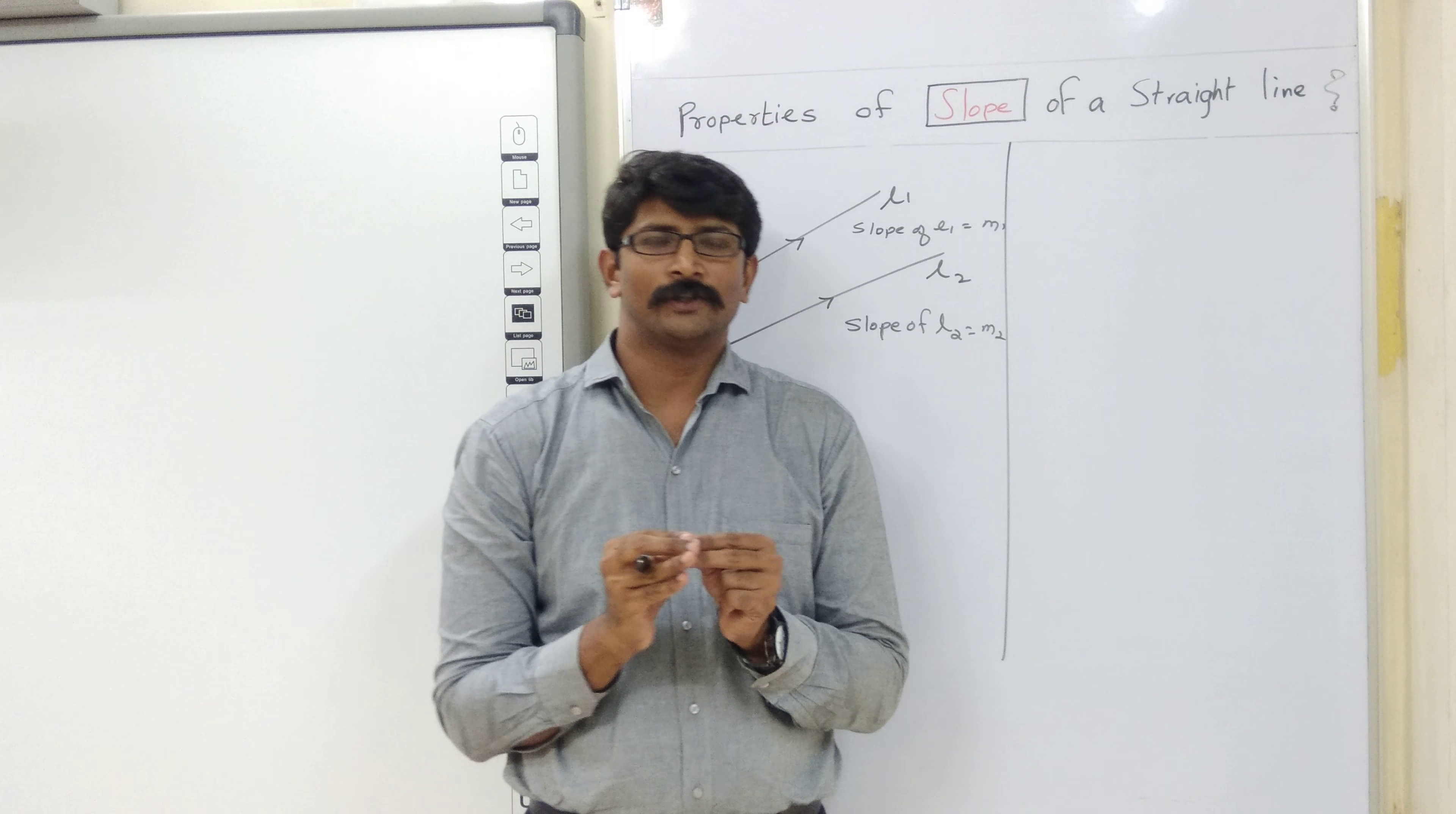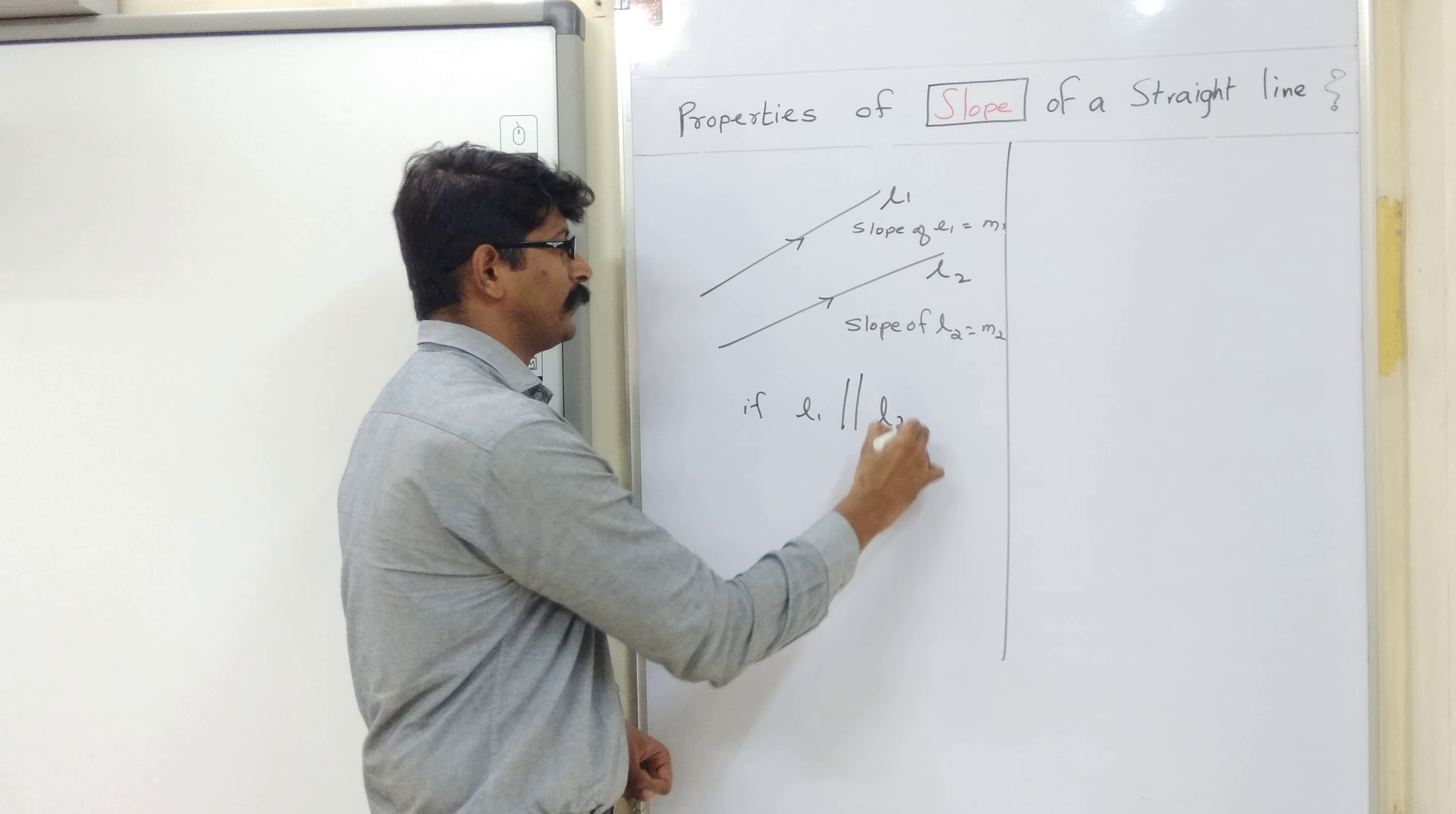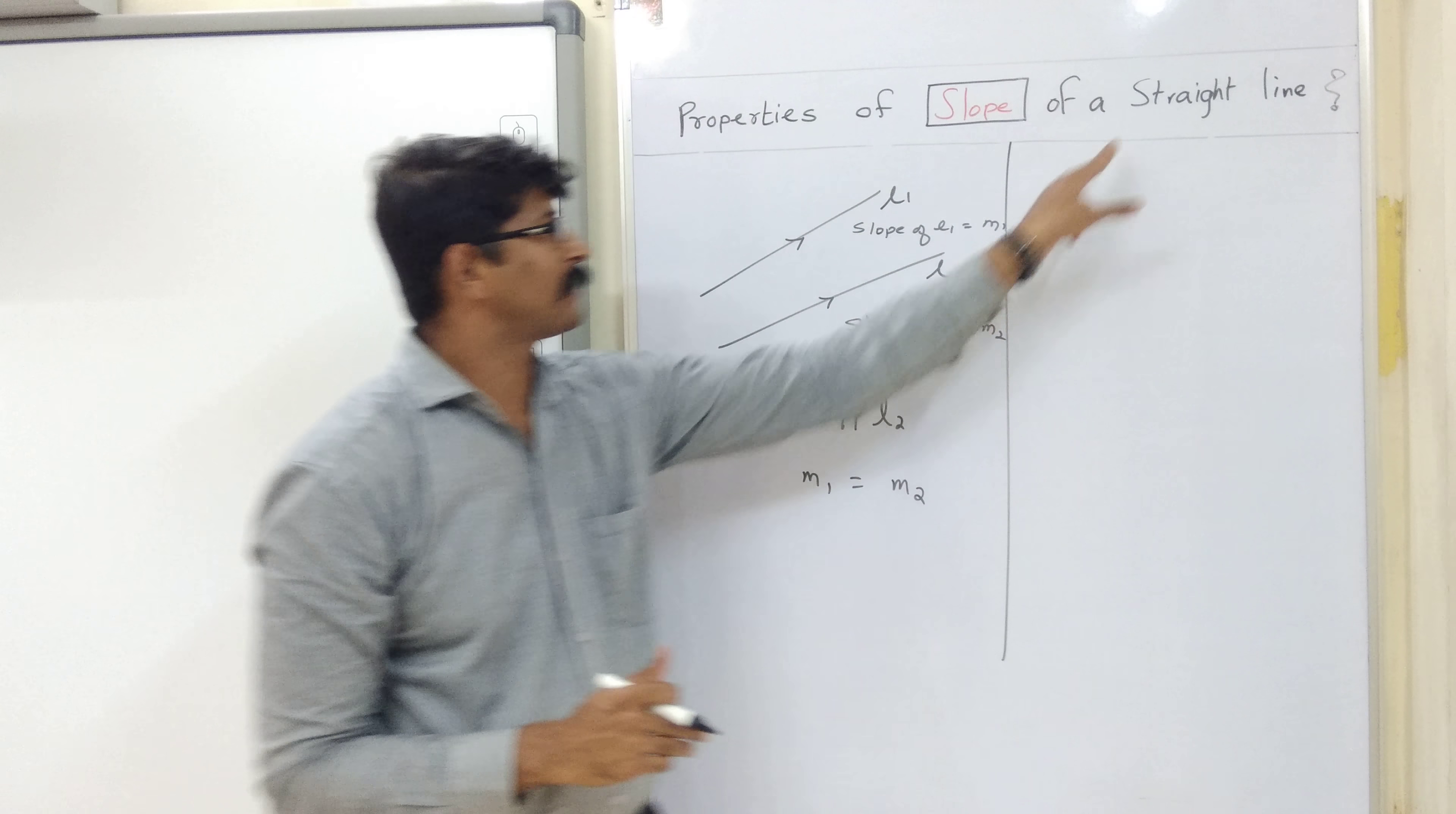So, if the lines are parallel, their slopes are equal. Understand students? If the lines are parallel, then the slopes are equal. If l1 is parallel to l2, then their slopes are equal. Yes, their slopes are equal.